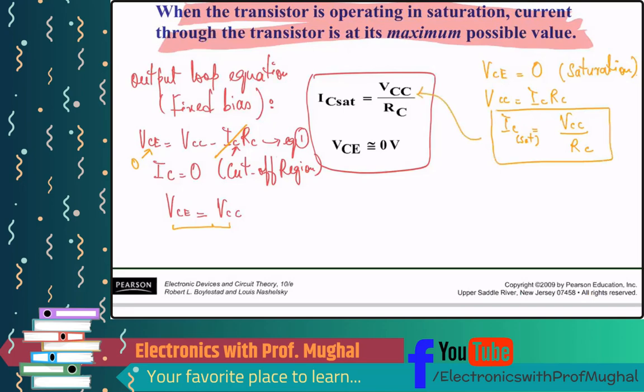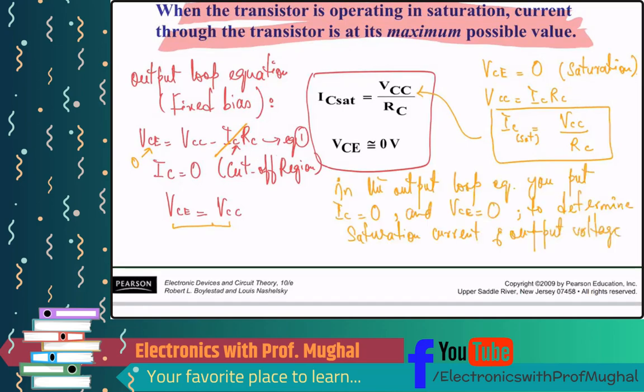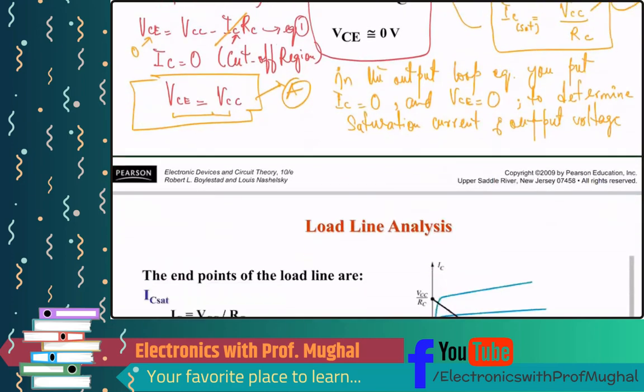In the output loop equation, I can write down here, in the output. And these two equations are important, this over here, this is A and this is B, because we then use these two equations to do the load line analysis.